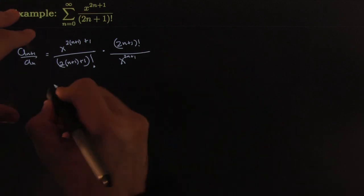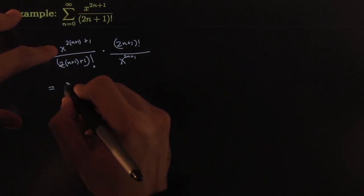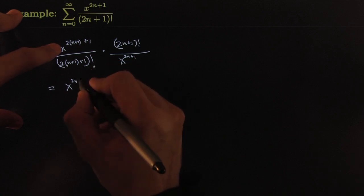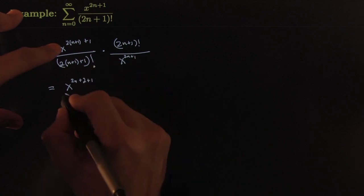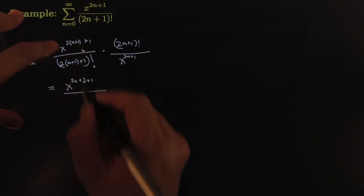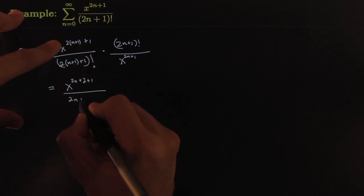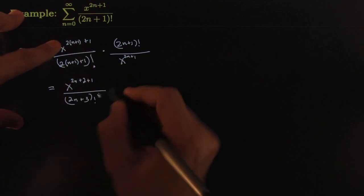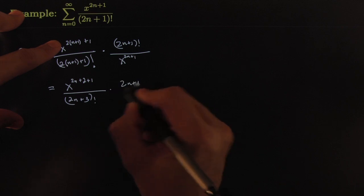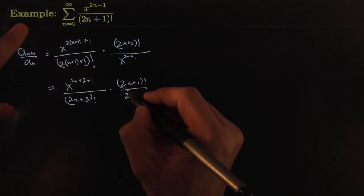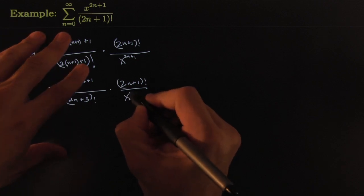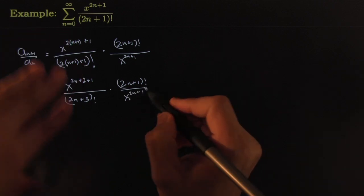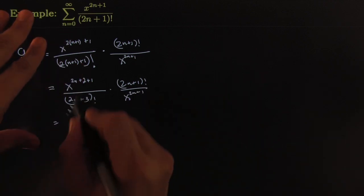Let's clean it up a little bit. So that would give us x to the 2n plus 2 plus 1 all over—I distributed that—all over 2n plus 3 factorial times 2n plus 1 factorial all over x to the 2n plus 1.